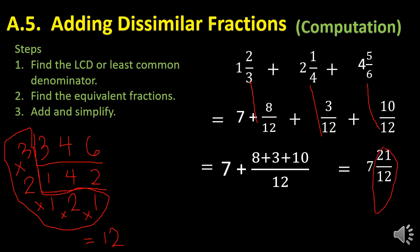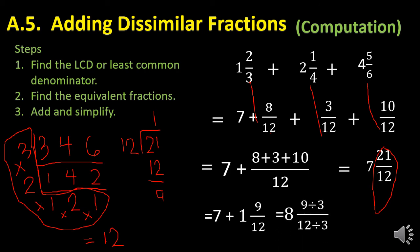Take note that I have a whole number and an improper fraction, so I rename it. Twenty-one divided by twelve: how many twelves in twenty-one? Only one. One times twelve is twelve. Subtract: twenty-one minus twelve gives nine as the remainder. So I have the whole number seven plus one and nine over twelve, which is eight and nine over twelve. Since nine and twelve can be divided by three: nine divided by three is three, and twelve divided by three is four. So finally the answer is eight and three fourths.